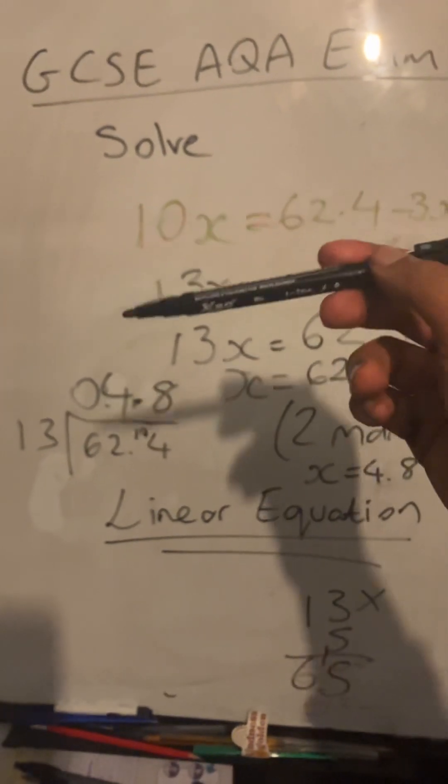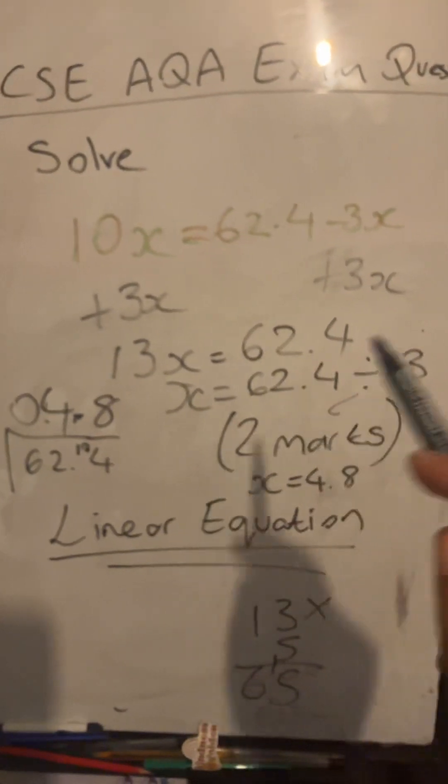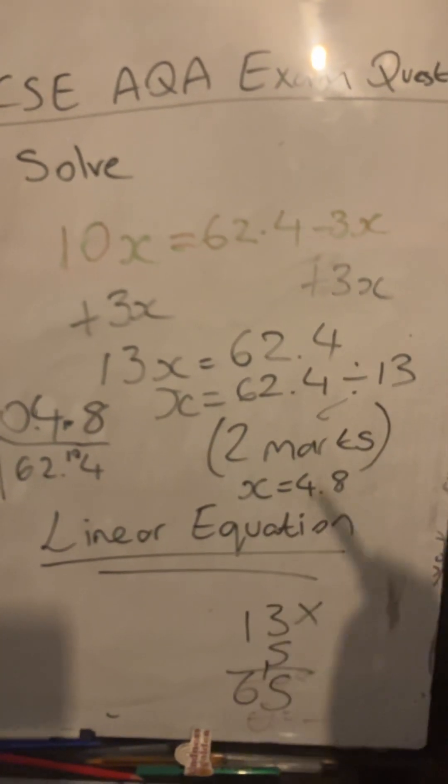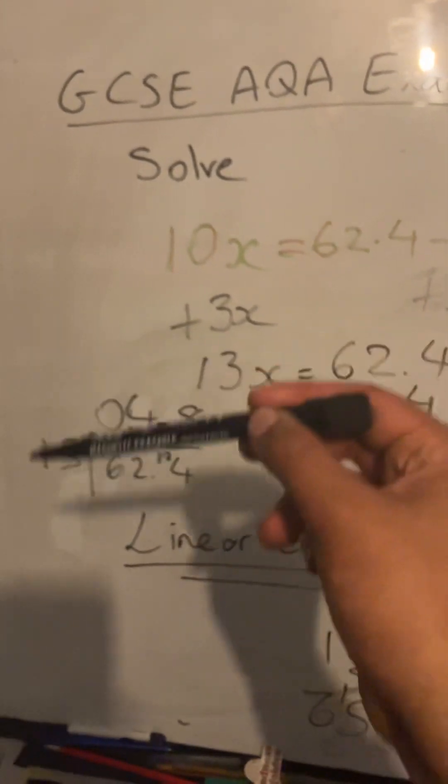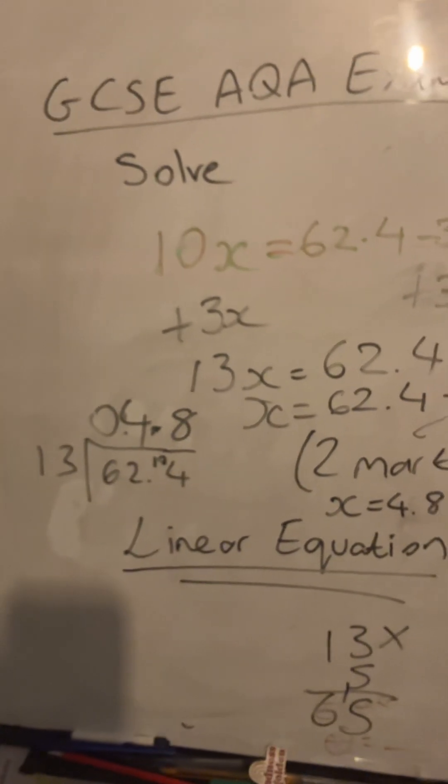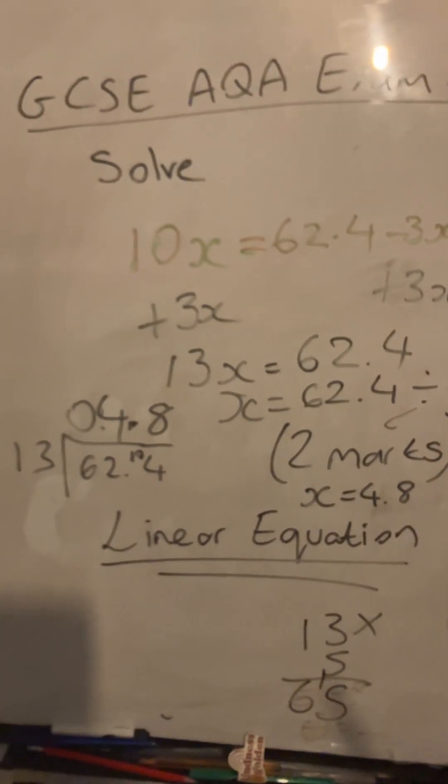Now I did do it by a bus stop method, but what I could do is just enter that into my calculator: 62.4 divided by 13, and you get an answer of 4.8. But it's always good to have that check and work out your answer to the side, in case it ever appears on a non-calculator, you will have a method there.